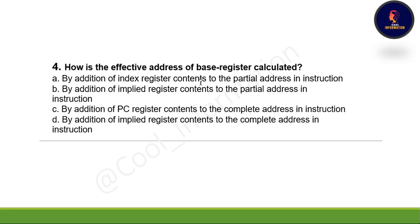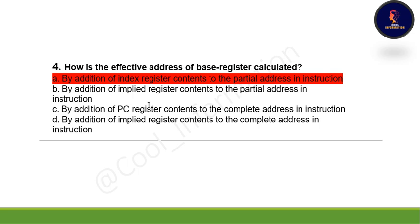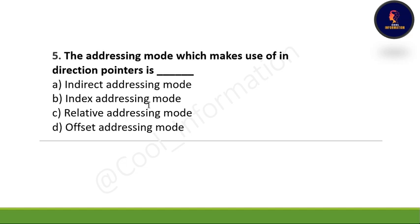Next question: How is the effective address of a base register calculated? Option A, by addition of index register contents to the partial address in the instruction; option B, by addition of implied register contents to the partial address; option C, by addition of program counter contents to the complete address; option D, by addition of implied register contents to the complete address. The correct option is A: by adding index register contents to the partial address of the instruction.